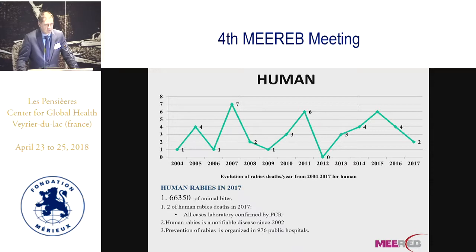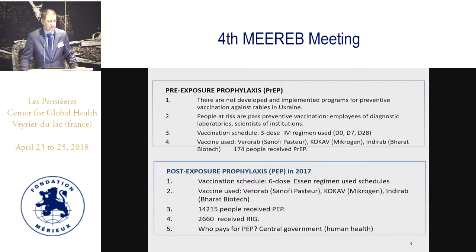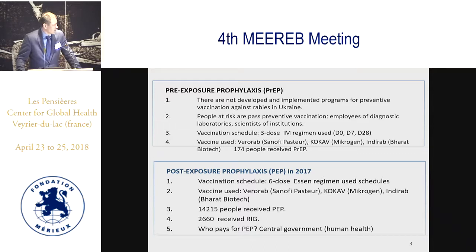All cases were diagnosed by PCR. From 2010, for the last eight years, we use PCR method for diagnosis of rabies. Speaking about pre-exposure prophylaxis, we use three vaccines — a difficult question why three different vaccines. In general, 174 people received these vaccines. After exposure, more than 14,000 people were vaccinated using the same three kinds of vaccines.